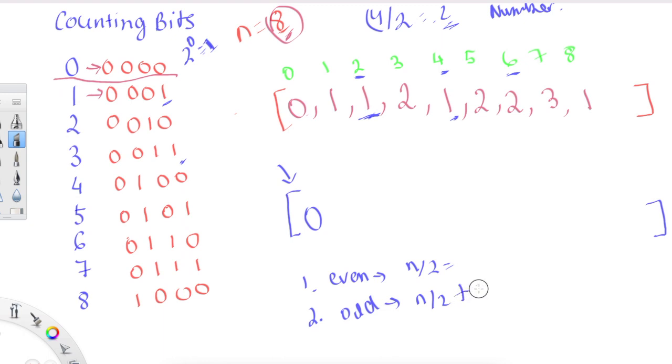If it is odd, then what we do is we do n over two, but then we add this one. Because you can see that for all the odd numbers, this last bit is always equal to one.